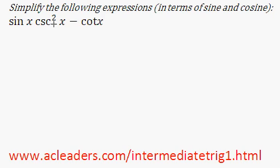We have sine x cosecant squared x minus cotangent of x. And of course cosecant squared of x is actually just going to be 1 over sine squared x.